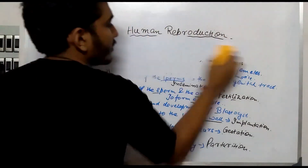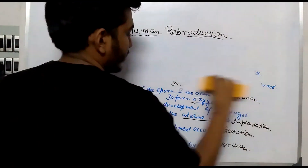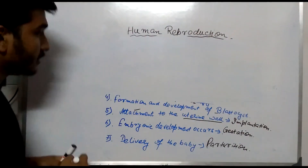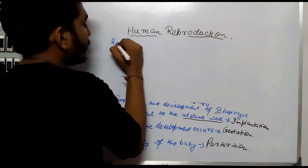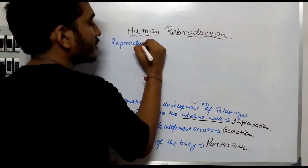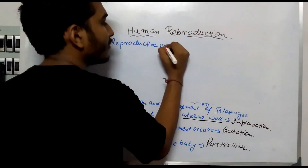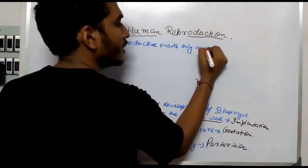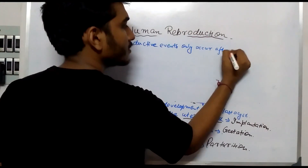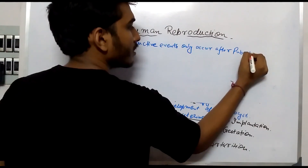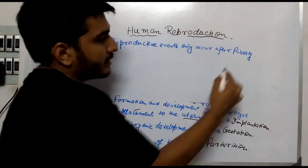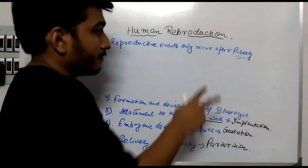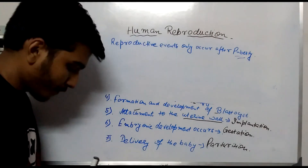Now some other important points given in the NCERT only. First: reproductive events occur only after puberty. After a male or female attains their puberty stage, reproductive events occur. Before puberty, no reproductive events occur.